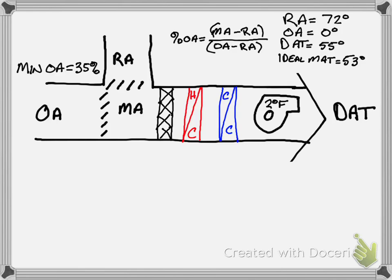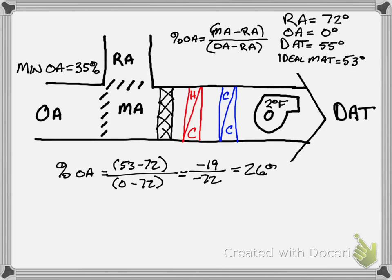So we go percentage of outside air equals 53 minus 72 over 0 minus 72, which comes out to be negative 19 over negative 72. So at least we have a negative on the top and the numerator and the denominator. And this comes out to be 26%.